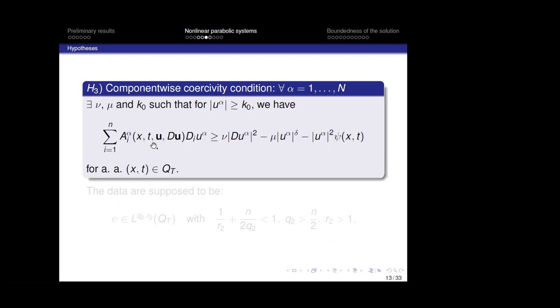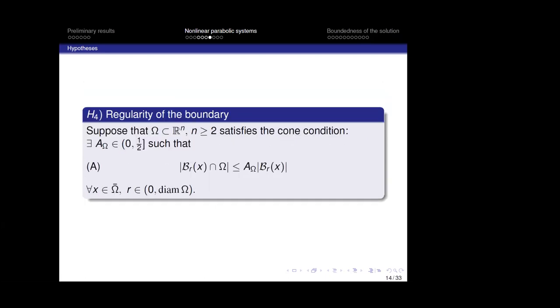Moreover, we assume a component-wise coercitivity condition: for each alpha between one and capital N, this inequality is satisfied. The data c belong to the anisotropic Lebesgue space L^{q_2,r_2} on the cylinder Q_T, with this condition verified. Moreover, we suppose that the domain omega satisfies the cone condition.